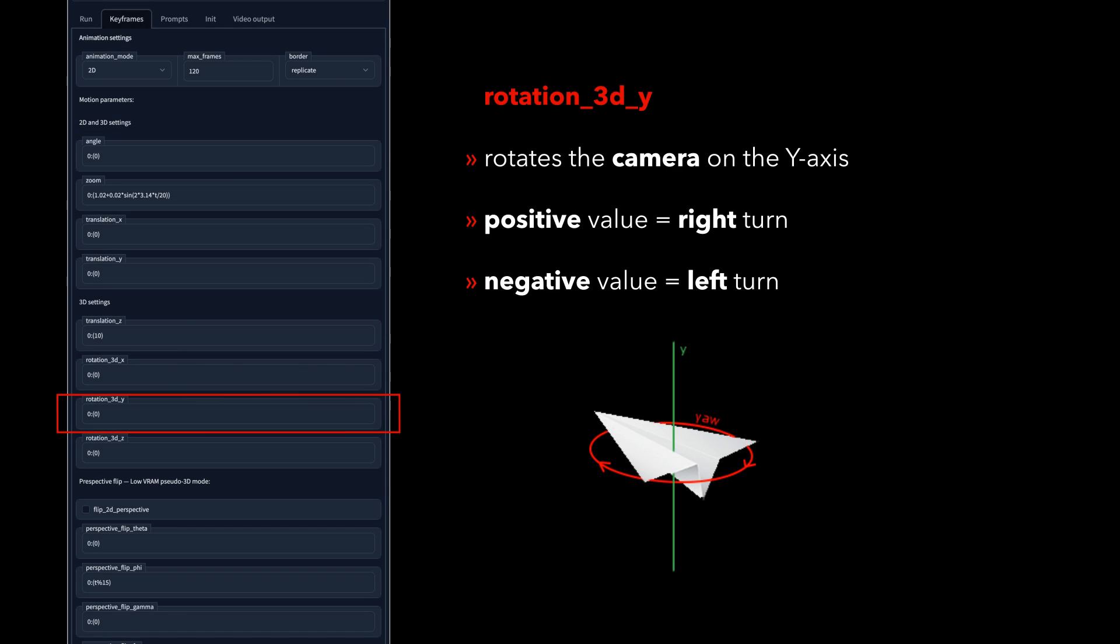Rotation 3D y lets us rotate the camera left and right, fixated on the y-axis. A positive value turns to the right, and a negative value turns to the left.